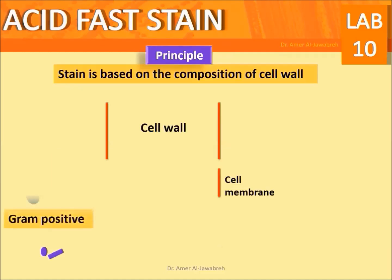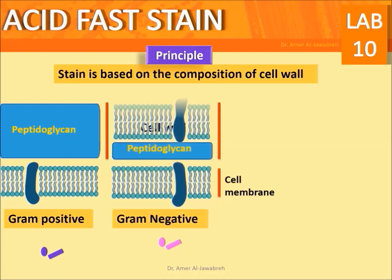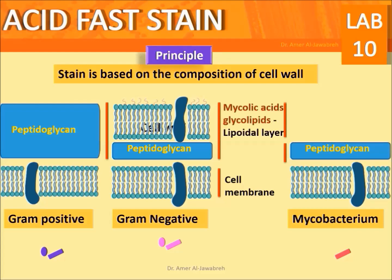Principle: The stain is based on the composition of the cell wall. A Gram positive bacterium has a thick peptidoglycan cell wall. A Gram negative bacterium has a thin peptidoglycan cell wall with a thick lipid bilayer. Mycobacterium has a thin peptidoglycan cell wall with a lipid layer composed mainly of mycolic acids and glycolipids, forming a sticky waxy lipoidal layer.